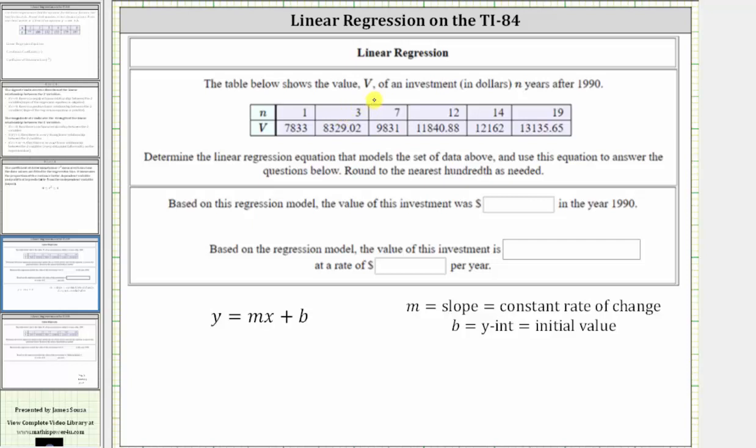The table below shows the value v of an investment in dollars n years after 1990. Notice how in the first row we have n, the number of years after 1990. In the second row we have v, the value of the investment in dollars.